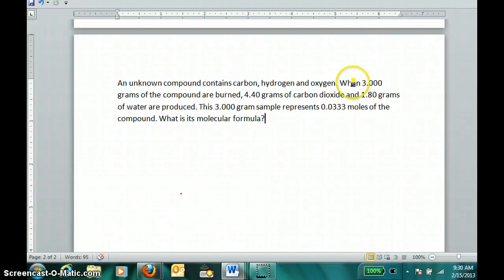As another example, when 3 grams of a compound are burned, and this compound contains carbon, hydrogen, and oxygen, we produce 4.4 grams of carbon dioxide, which always happens by combustion analysis. The carbon ends up becoming part of the CO2. We also get 1.80 grams of water, and we know the hydrogen is all oxidized to the hydrogen in water. I can use this information to calculate my empirical formula.